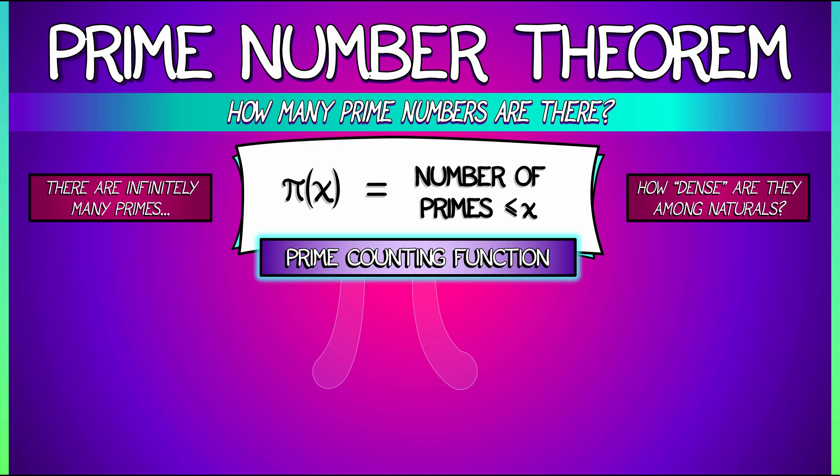So pi of 10 is equal to 4: 2, 3, 5, 7. Pi of 11 is 5. All right, what we want to know is the asymptotics of this function, pi of x, as x goes to infinity.